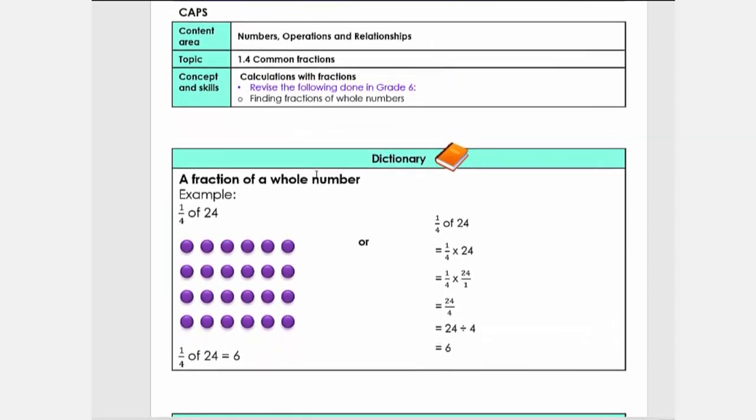I'm going to ask you to pause at the dictionary. You need to look at how learners learned about one quarter of 24 previously and how they're doing it now. Previously we made use of diagrams, and learners saw that one quarter of 24 by looking at one quarter of the diagram was six.